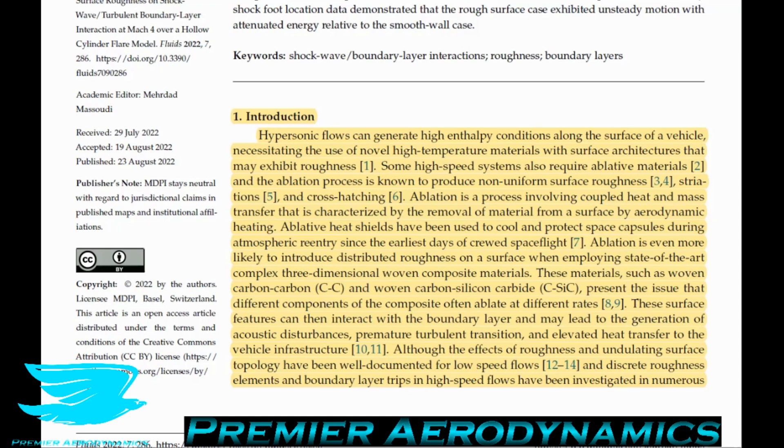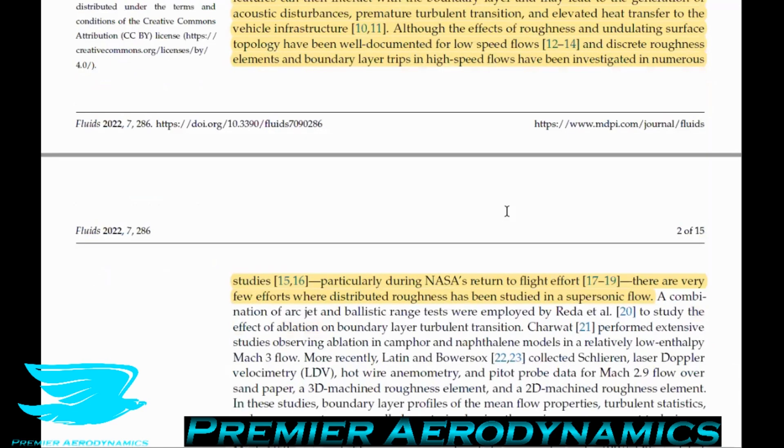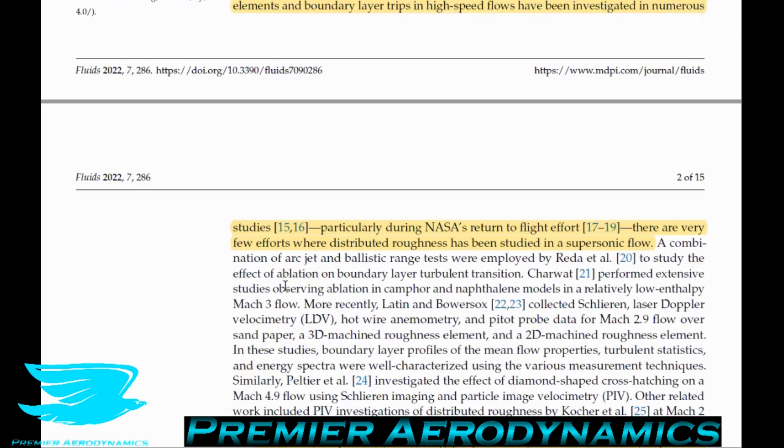Ablation is even more likely to introduce disturbed roughnesses on a surface when employing state-of-the-art complex three-dimensional woven composite materials. These materials, such as woven carbon-carbon and woven carbon-silicon carbide, present the issue that different components of the composite often ablate at different rates. These surface features can then interact with the boundary layer and may lead to the generation of acoustic disturbances, premature turbulent transition, and even elevated heat transfer to the vehicle infrastructure. Although the effects of roughness have been well-documented for low-speed flows, there are very few efforts where distributed roughnesses have been studied in supersonic and hypersonic flows.